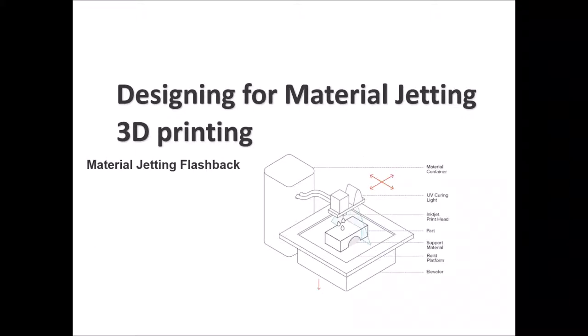Looking back at the material jetting sketch, we can see the inkjet print head moves in the X and Y direction on the top plane. The part is built layer by layer on the build platform, and the base is either raised or pulled downward as the program requests, in order to achieve the final 3D part needed.